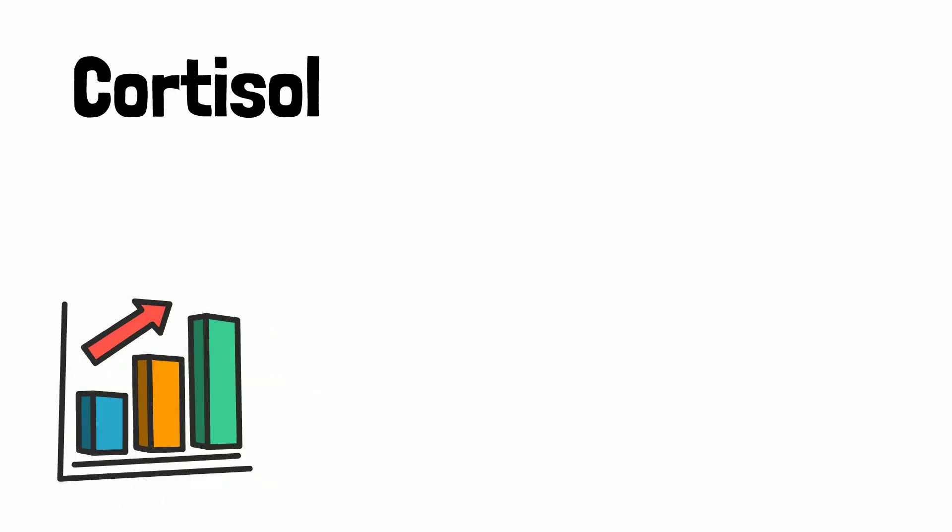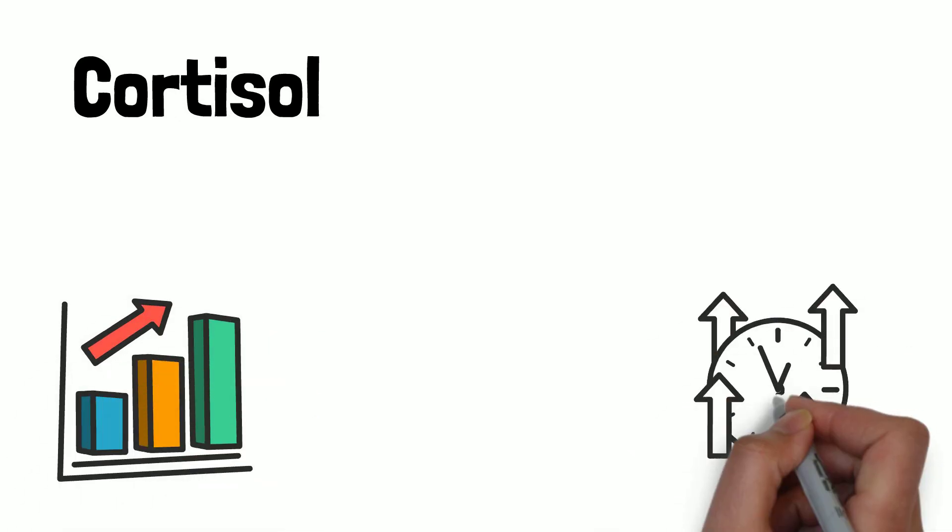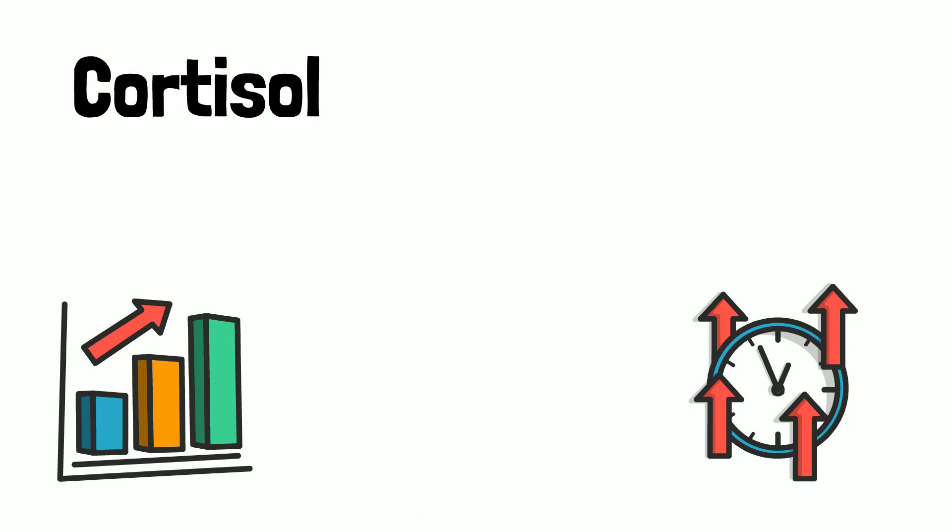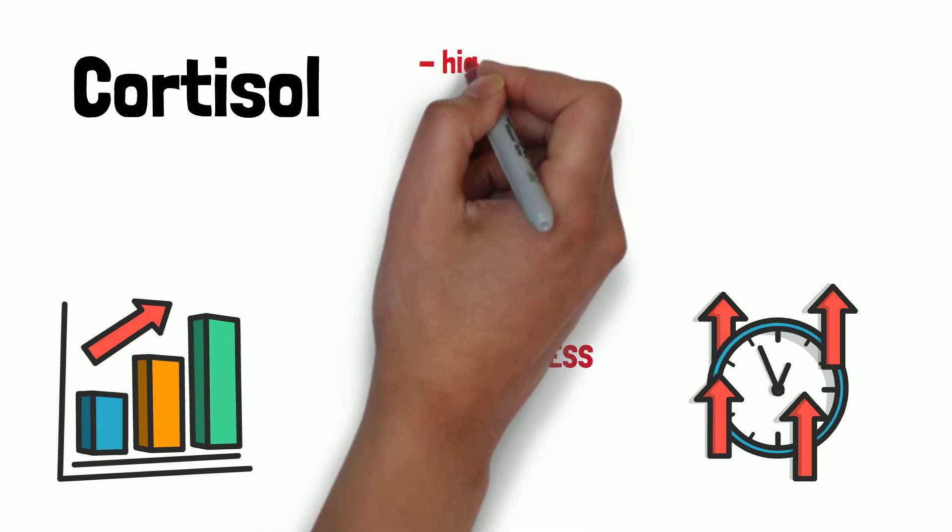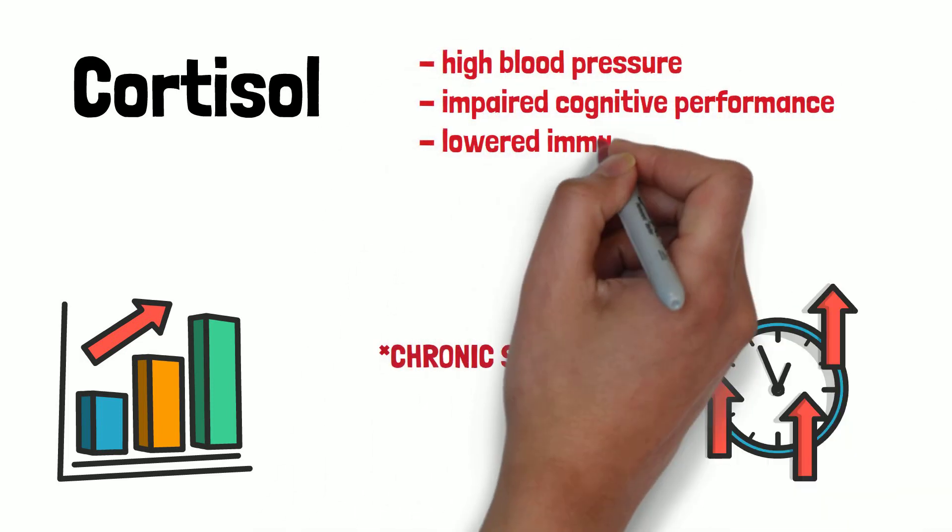Cortisol, a main stress hormone, is secreted at high levels during the body's fight or flight response. Elevated cortisol in the bloodstream for a prolonged period of time, such as with chronic stress, can lead to high blood pressure, impaired cognitive performance, and lowered immunity.